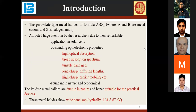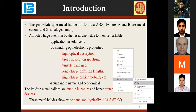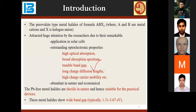The perovskite-type metal halide of formula ABX3, where A and B are metals and X is a halogen anion, has attracted huge attention by researchers recently due to their remarkable applications in solar cells and outstanding optoelectronic properties like high optical absorption, broad absorption spectrum, tunable band gap, long charge diffusion length, and high charge carrier mobility. These materials are abundant in nature and are very cheap.